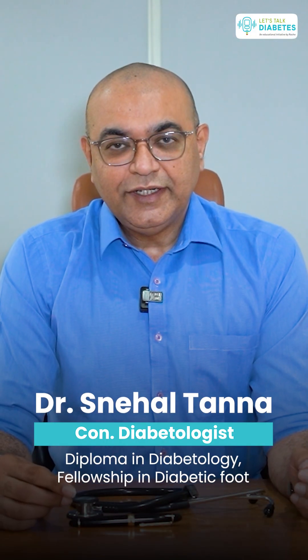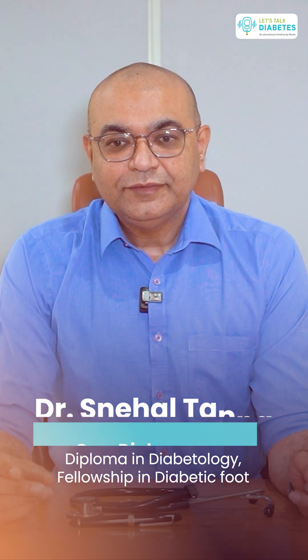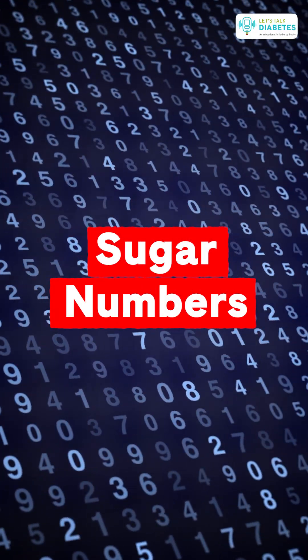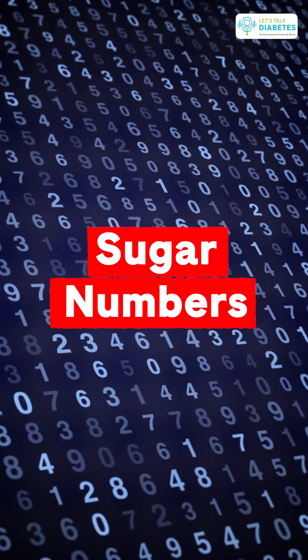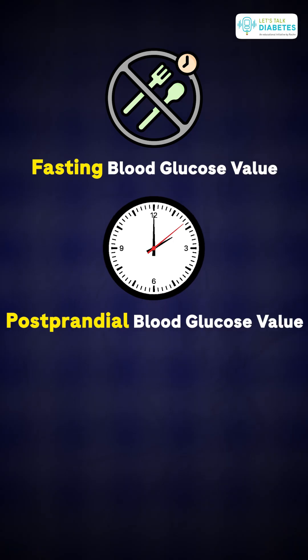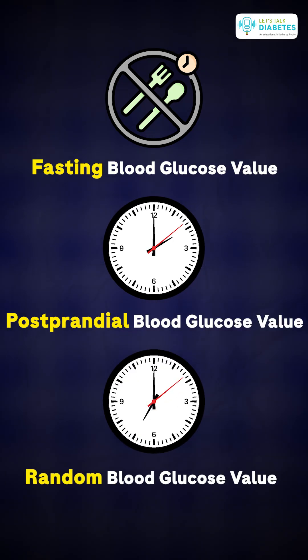Hello, I am Dr. Suryanthanda. Today I am here to discuss with you about numbers. As far as blood glucose levels are concerned, there are three types of values that we talk about: fasting blood glucose values, postprandial blood glucose or post-lunch glucose values, and random glucose values.